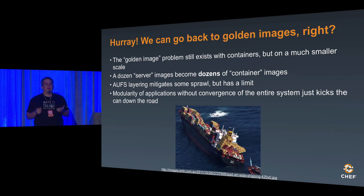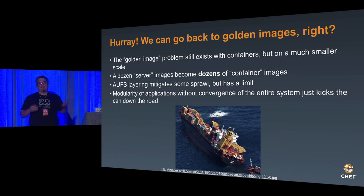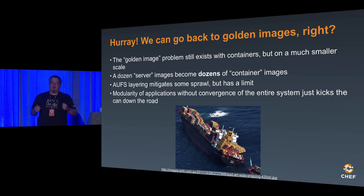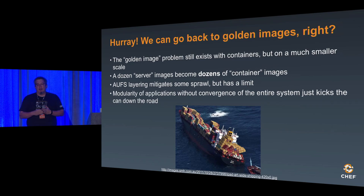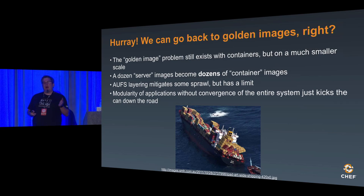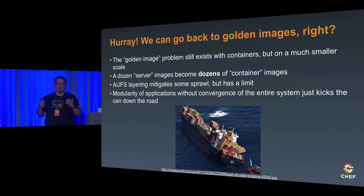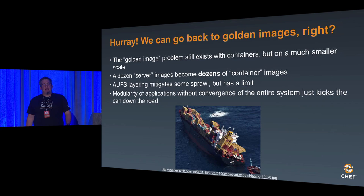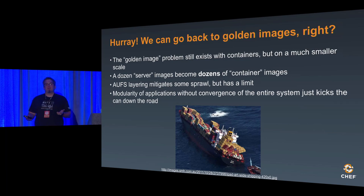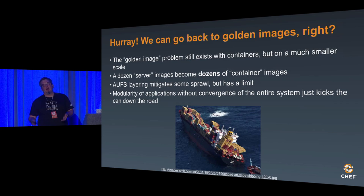Hooray — we can go back to golden images! Golden images are the concept of: I've created a server, I'll take a snapshot, bring it back up whenever I want, and never touch it again. Unfortunately, this problem still exists with containers, just on a smaller scale. You configure your system, spin it up, and three months down the road you spin up a new one — but time has progressed and now you have a server that isn't what you want. You have to set up some out-of-band process to keep those images updated and groomed.